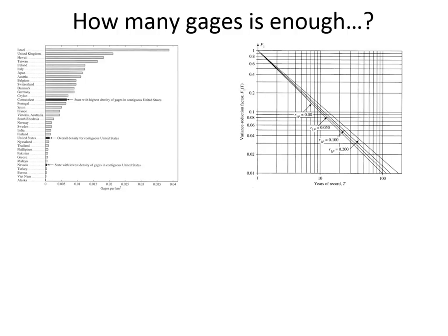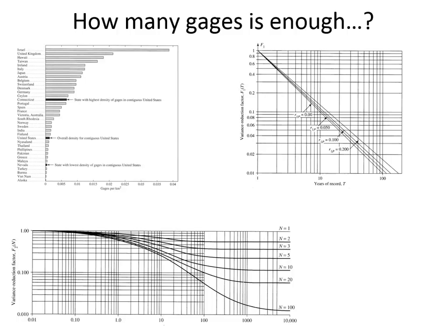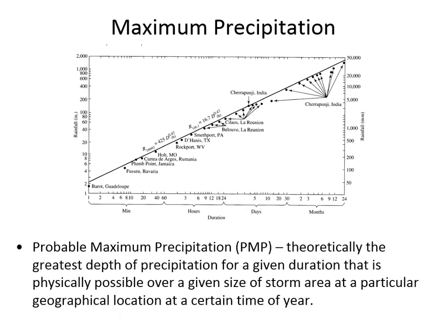Unfortunately, a lot of the gauges we have have either only been online for a few years or are no longer operational, so the quality of data isn't likely to improve. If you only have one gauge to represent an area, the variance is 1.0, meaning there's little relationship between the data gathered and the actual precipitation. As the number of gauges increases, variance decreases, but the cost is very high. The extra precision isn't always worth the extra cost.